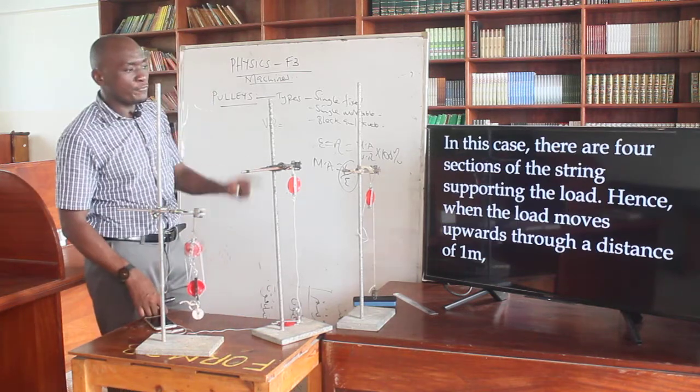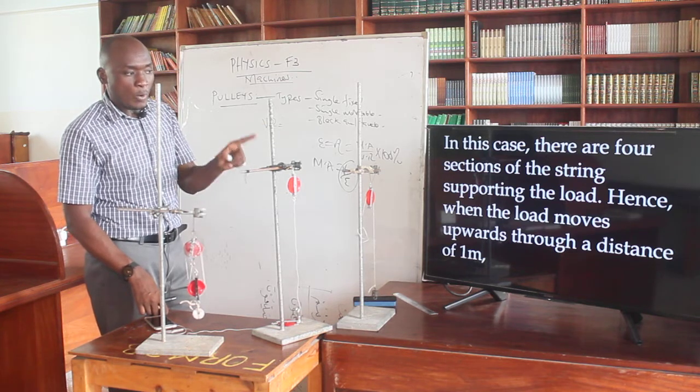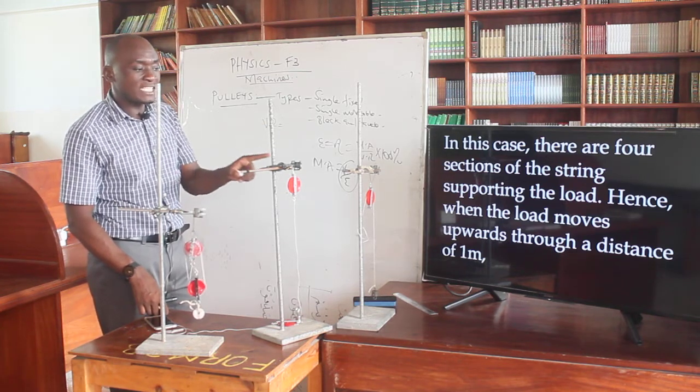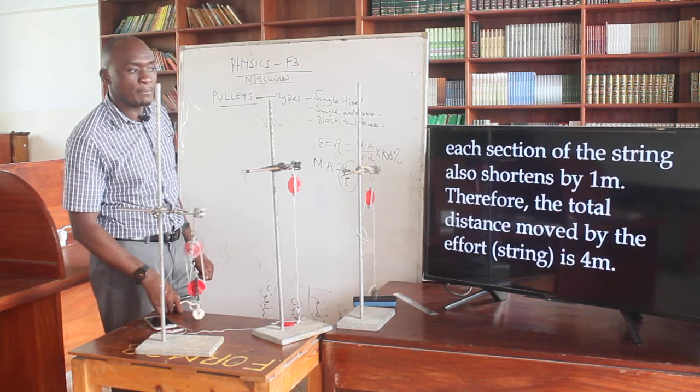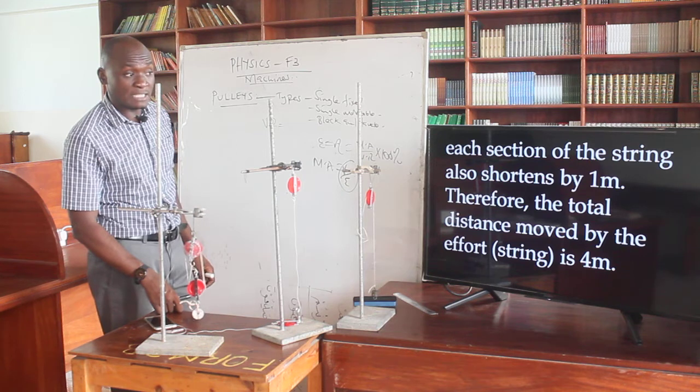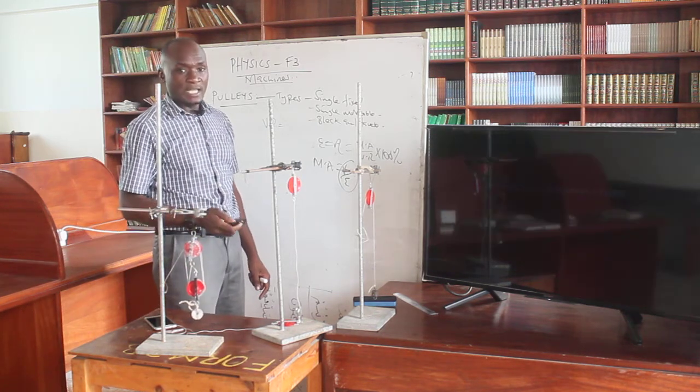In this case, there are four sections of the string supporting the load. Hence, when the load moves upward through a distance of one meter, each section also shortens by one meter. Therefore, the total distance moved by the effort is actually four meters.